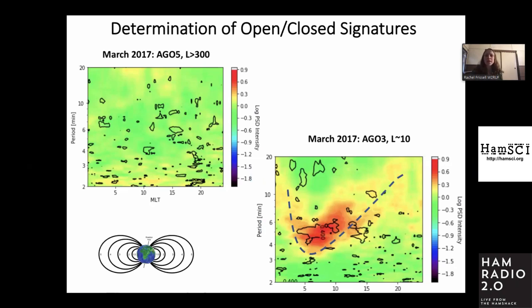In order to determine the open-closed signatures, a simple way to imagine the open-closed boundaries: if you take a guitar string, clamp both ends, and pluck it, it vibrates — that's very similar to a closed field line. Now if you snip it, it becomes an open field line and you're not going to see those ULF waves. Looking at these two figures, the upper left is March 2017, EGO 5, which is deep in the polar cap. In the polar cap you expect to see open field lines, so there's no signature of the waves. Now if you look at EGO 3, that shows some sort of signature of the ULF waves.